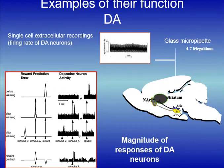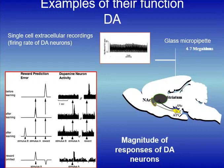I switch now to dopamine neuron function. In the 1990s, Wolfram Schultz conducted experiments where he found that dopamine neurons in the mesencephalon — in the ventral tegmental area and the substantia nigra pars compacta — were reacting to reward. A glass micropipette was inserted in those areas to measure extracellular cell recordings.